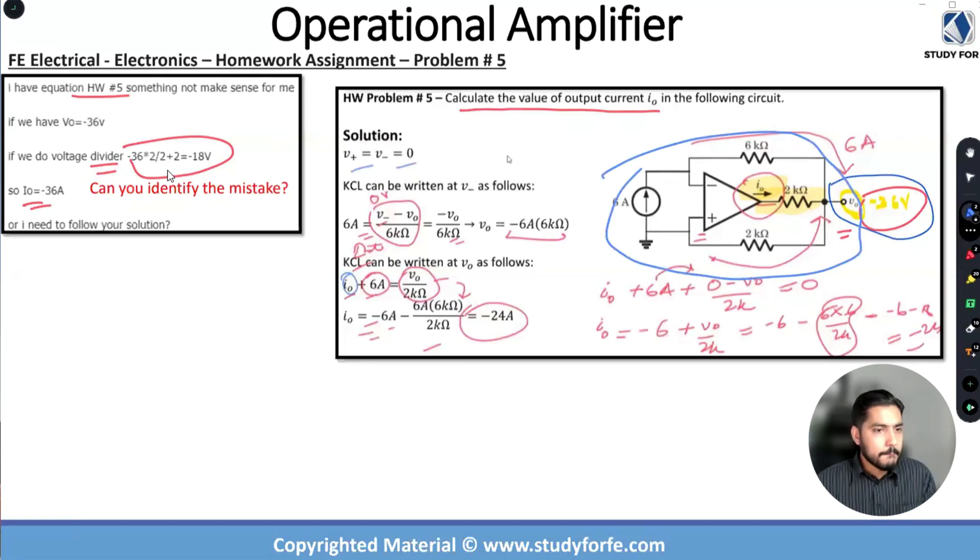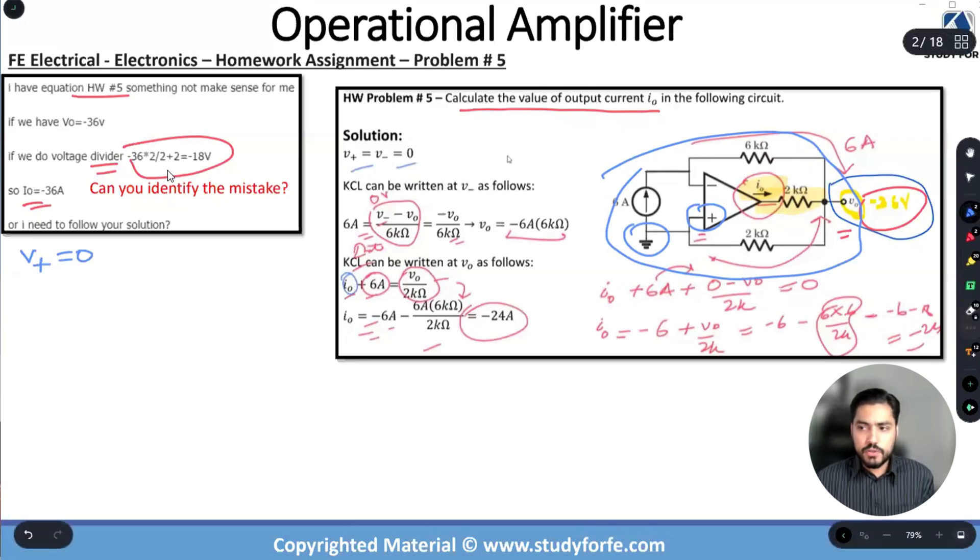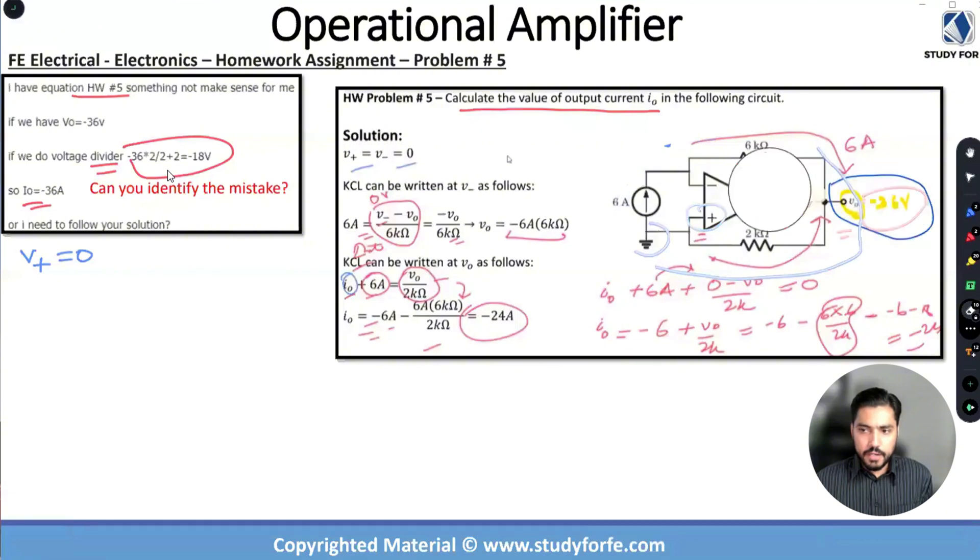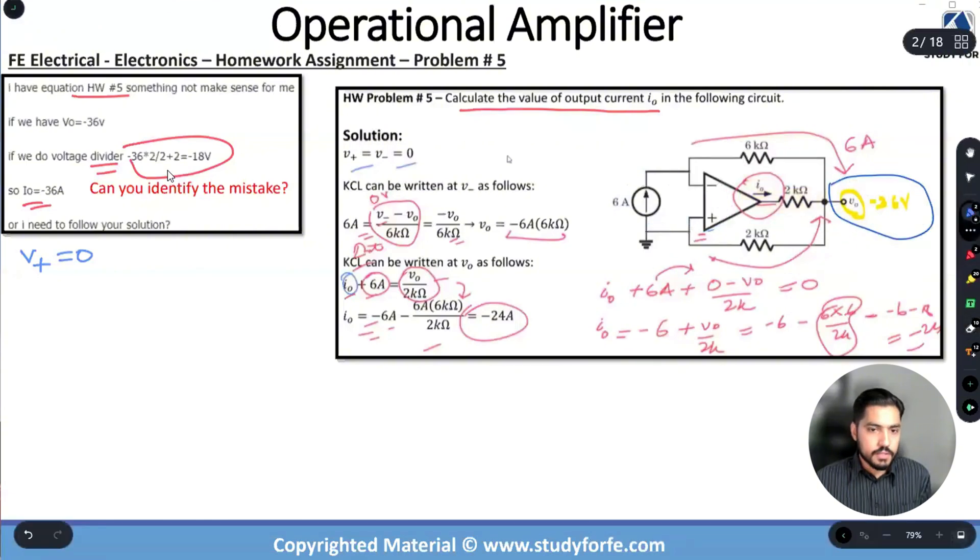Can you guys see what the value? Yeah v plus is grounded right, this is a ground. So the first thing that I figure out is that v plus is equal to zero and guess what is the value of v minus? What is the value of v minus based on what we've just discussed? V minus better be zero as well, why? Because for an ideal op amp v plus is equal to v minus so this is equal to zero.